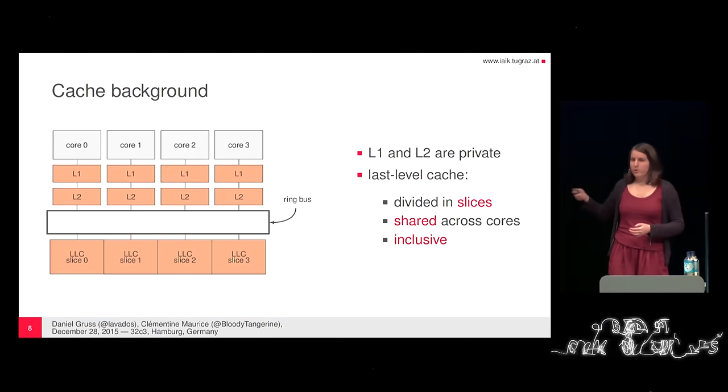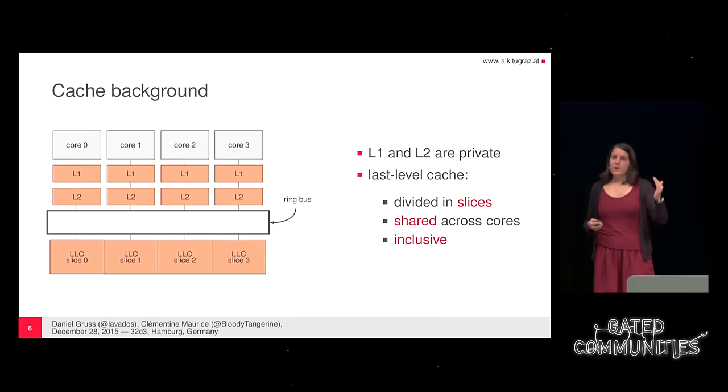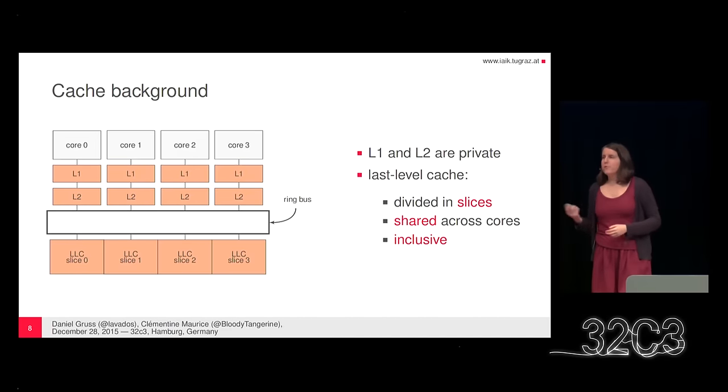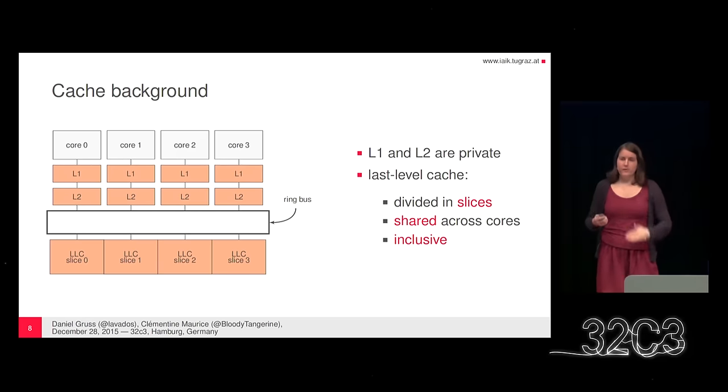Some background on the cache architecture, which is important for the rest of the talk. In modern processors we have several cores — let's say four — and a hierarchy of different cache levels. Level 1 and Level 2 are private to each core. Then we have the last-level cache, which is divided into slices that are shared across all cores. Importantly, this cache has the property of being inclusive, meaning all data in L1 and L2 is also contained in the last-level cache.